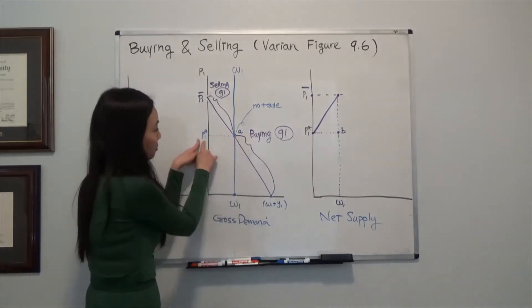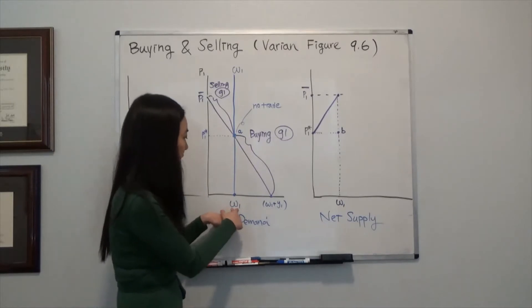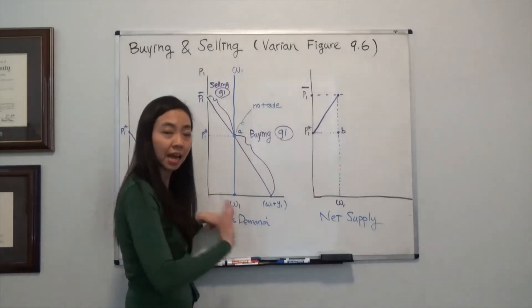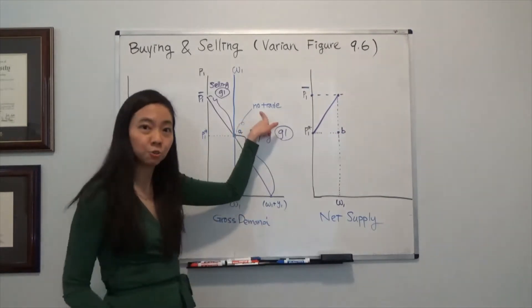So that's the middle figure, the middle panel where your price is P1 star and I'm just going to consume my initial endowment, omega 1 and omega 2. I am not trading with anyone. So at point A, I call that no trade point.